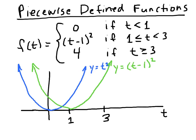we only want to include that from 1 to 3. Using red for the portion of the function we want to use — that's just this part right here. If we put 3 into t minus 1 squared, we have 3 minus 1, which is 2, squared equals 4. So the value on the vertical axis at that point is 4. The red part is just the portion of t minus 1 squared between 1 and 3.